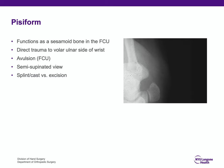The pisiform is a sesamoid bone in the flexor carpi ulnaris, proximal to the hamate hook, on the volar ulnar aspect of the wrist. It's a very unusual, rare fracture, secondary to direct trauma on the volar ulnar aspect of the wrist. It could also be an avulsion fracture because the flexor carpi ulnaris tendon attaches to the pisiform.